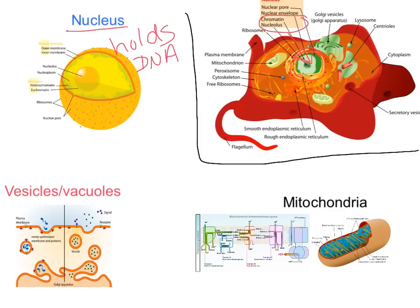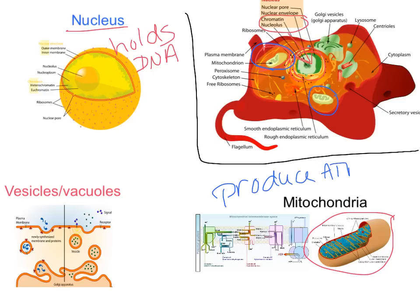All eukaryotic cells are also going to have mitochondria — the organelle that looks like a bean. The mitochondria's job is to produce ATP from food. It doesn't matter where the food came from — whether the organism made it like a plant does, or ingested it like an animal. The mitochondria is found in all kinds of eukaryotic cells, including plant cells.